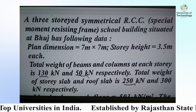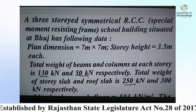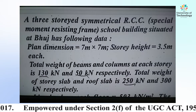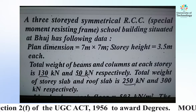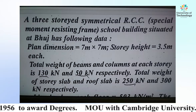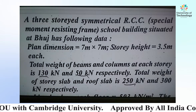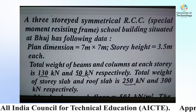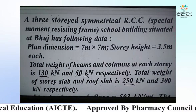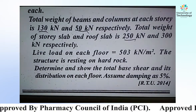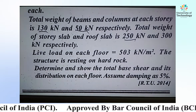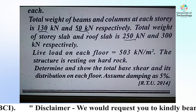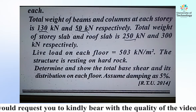Each story height is 3.5 meter. Total weight of the beams and columns at each story is 130 kN and 50 kN respectively. Total weight of the story slab is 250 kN and roof slab is 300 kN. Live load on each floor is 50 kN per meter square. The structure is resting on hard rock.